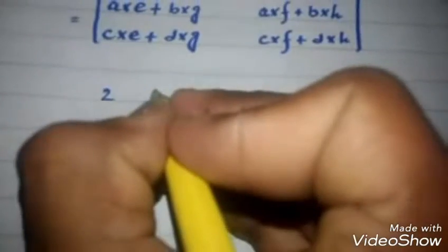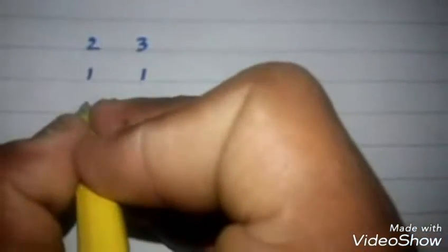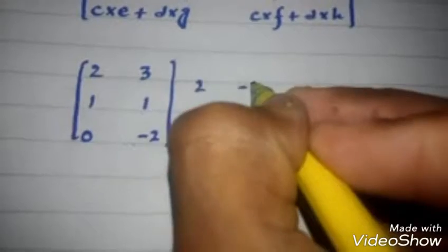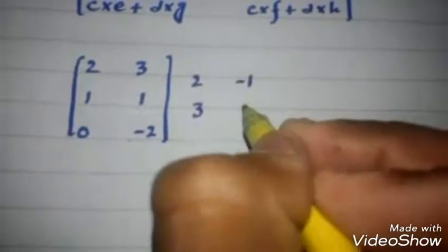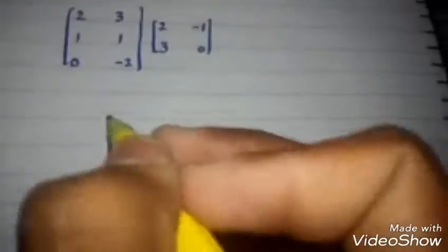Now we take a numerical example. Matrix 1 is: [2, 3; 1, 1; 0, −2] and Matrix 2 is: [1, 2, −1; 3, 0, 1]. Now we will multiply these two matrices.